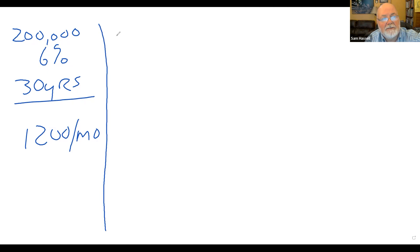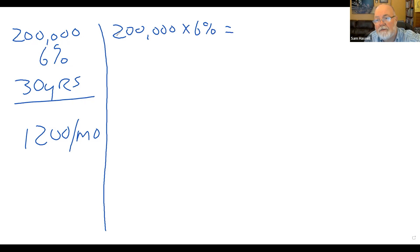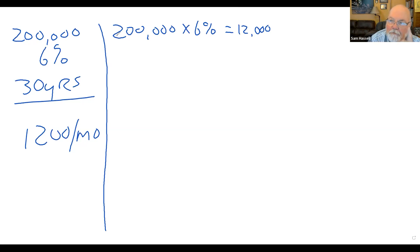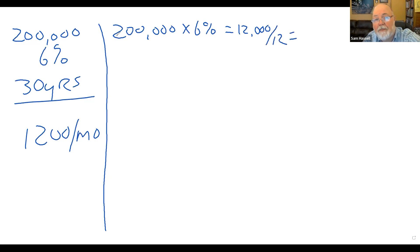If I borrow $200,000 — $200,000 times 6% — how much is that for a year's worth of interest? A year's worth of interest at 6% is going to be $12,000. So that means that I'm going to pay for the first month $1,000 in interest, because I'm going to divide this by 12. So for the first month, $1,000 is going to interest.